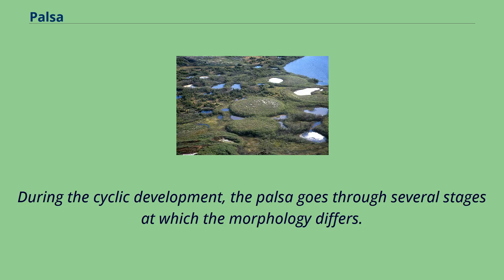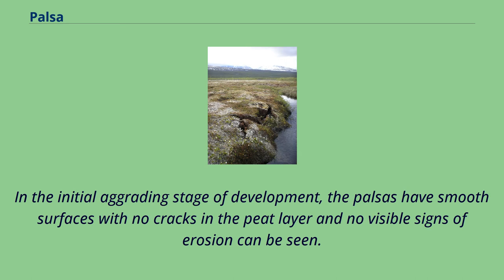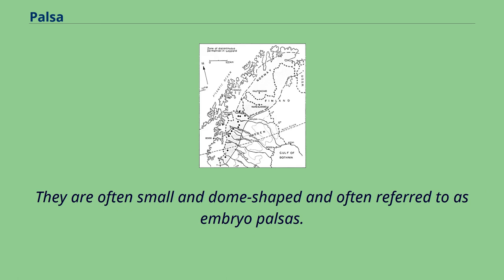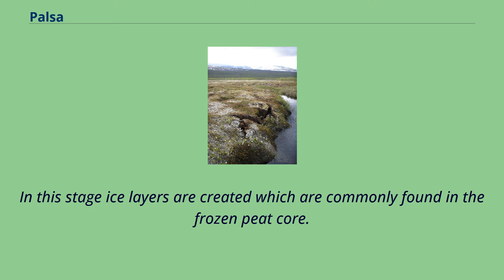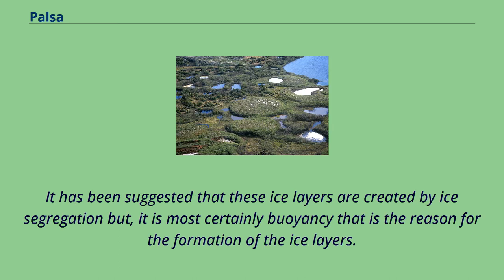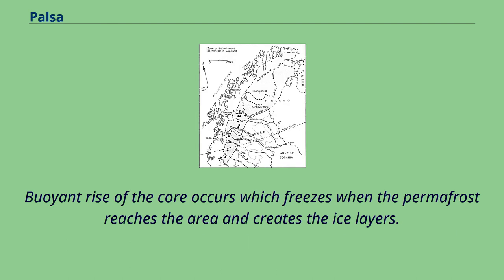During the cyclic development, the palsa goes through several stages at which the morphology differs. In the initial grading stage of development, the palsas have smooth surfaces with no cracks in the peat layer and no visible signs of erosion. They are often small and dome-shaped and often referred to as embryo palsas. In this stage, ice layers are created which are commonly found in the frozen peat core. It has been suggested that these ice layers are created by ice segregation, but it is most certainly buoyancy that is the reason for the formation of the ice layers. Buoyant rise of the core occurs which freezes when the permafrost reaches the area and creates the ice layers.